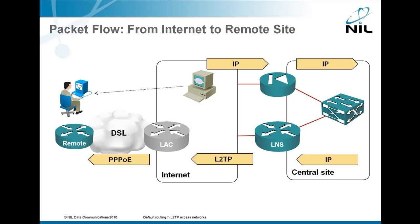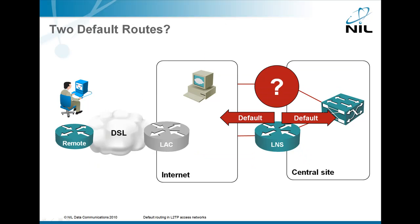If you know the exact IP addresses of the LAC servers, you could configure static routes pointing to them on the LNS. Usually that's not the case, so you need a default route on the LNS pointing toward the internet, like this. To propagate packets from the remote site to the web server, you need a default route pointing right. And to send the return packets through the LAC to the remote site, you need a default route pointing left.